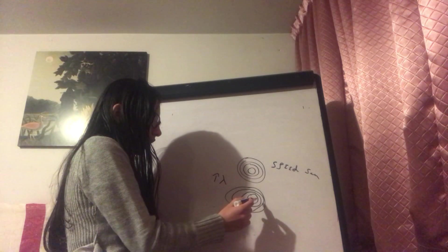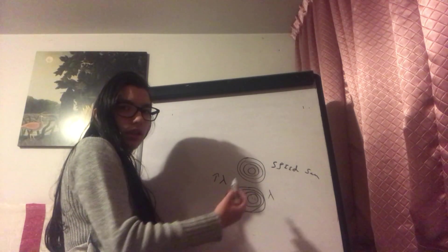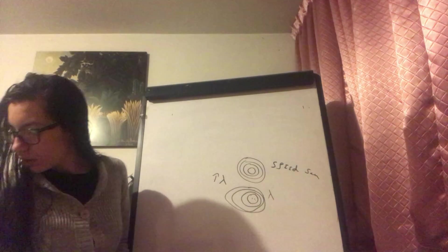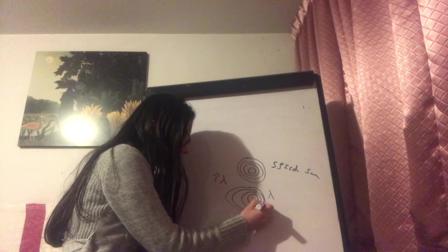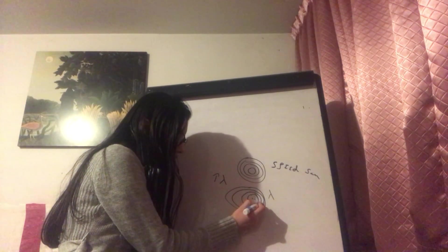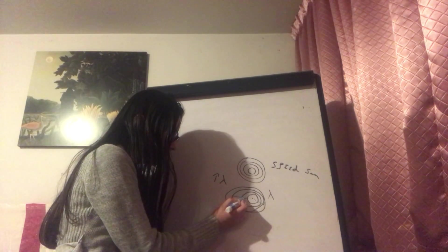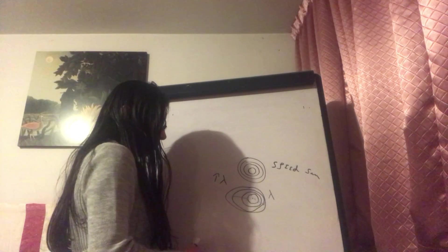And here the wavelength, that is the distance between one crest and another, is between this, this, and this. This is the wavelength. This is the wavelength. Not here, here. So here the wavelength is decreasing.